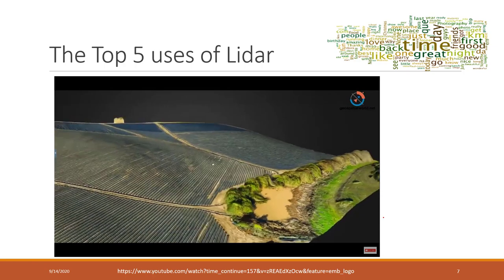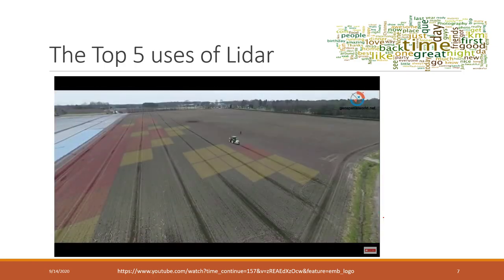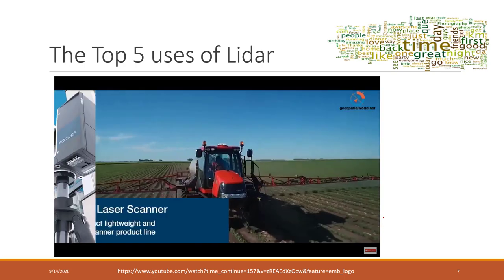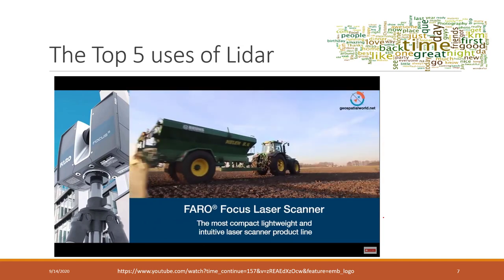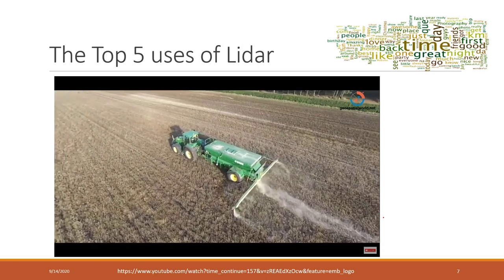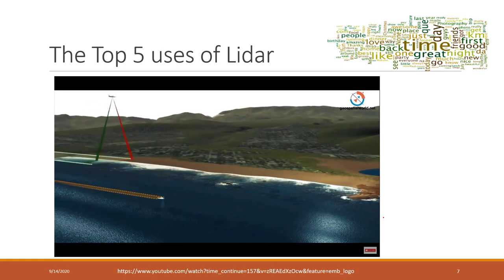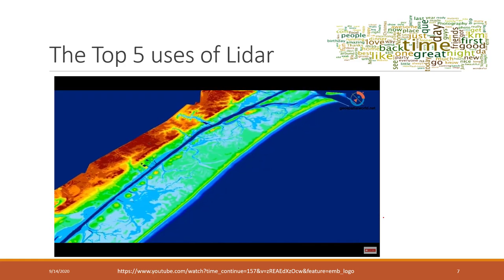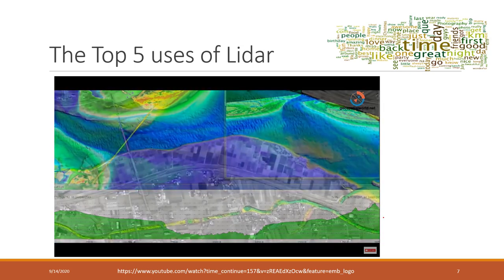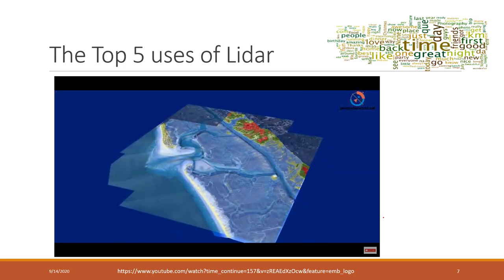Agriculture: LiDAR can be used to create 3D elevation maps of land, converted to slope and sunlight exposure area maps. This helps identify areas requiring more water or fertilizer, saving farmers time and money. River survey: green-wavelength LiDAR can penetrate water to measure underwater terrain, creating 3D models of the riverbed to understand depth, width, and flow, and help monitor flood plains.